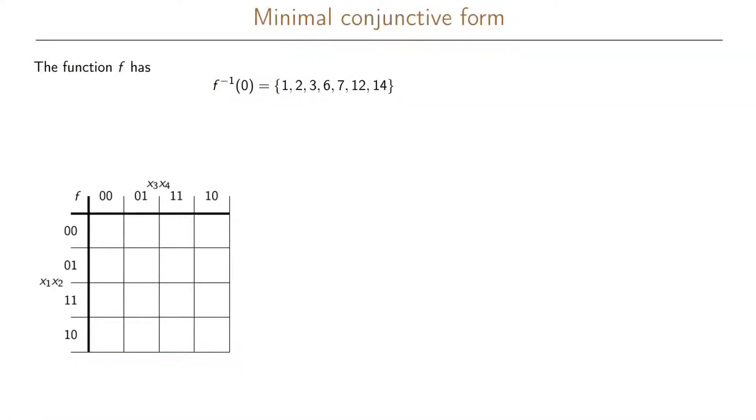In this example we want to give the minimal conjunctive form of a boolean function. What we are given here is a boolean function f where we are given the offset of the function, that is the rows in our truth table where we have a zero for the function.